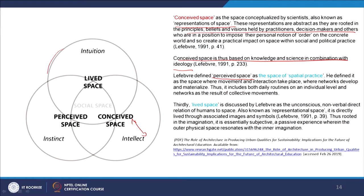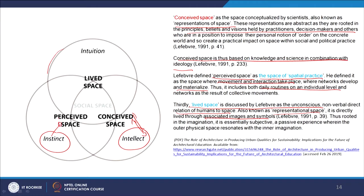Perceived space — the second form — is the space of spatial practice, where movement, interaction, and networks develop and materialize. This includes daily routines at both individual and collective levels. Lived space is an unconscious, non-verbal, direct relation of humans to space — a form of representational space, lived through various associations, schemata, images, and symbolic aspects. Together these cover the intellect that conceives, the instincts that develop networks, and the intuitions understood through images and symbolic meaning.